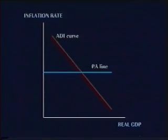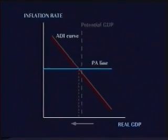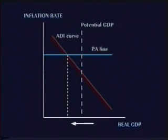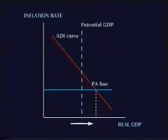The PA line is horizontal, because the same behavior occurs no matter what the level of real GDP. The PA line tells us what the level of inflation is. Thus, looking at the intersection of the PA line and the ADI curve tells us the level of real GDP at any given time.